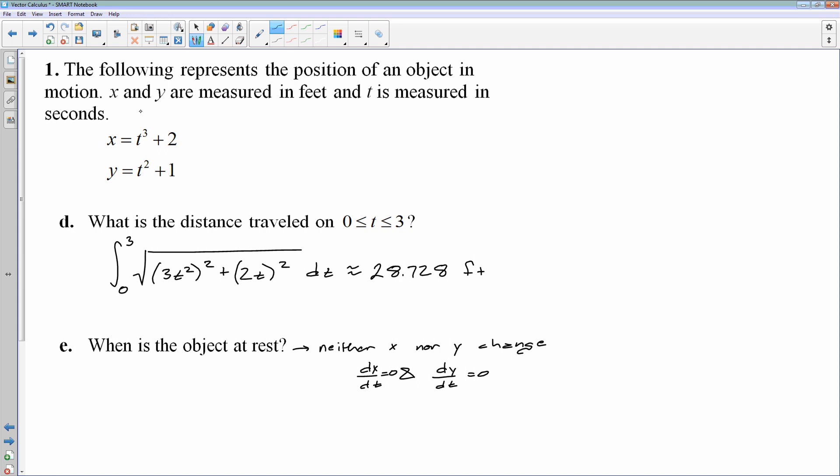So that means dx/dt and dy/dt equals 0. And the thing is, it has to happen at the same time. So let's find dx/dt. dx/dt is 3t². And I'll set that equal to 0 and find out when that equals 0. And 3t² equals 0 at t equals 0. And then I'll do the same thing for dy. dy/dt is 2t. I'll set that equal to 0. That also is 0 at 0. So the object is at rest when t is equal to 0.